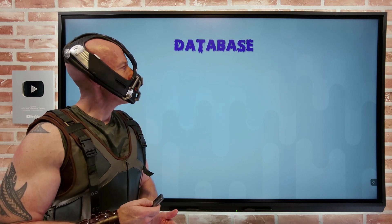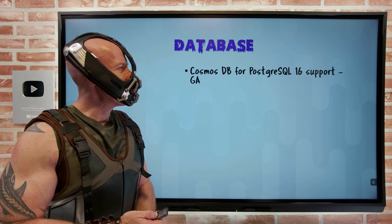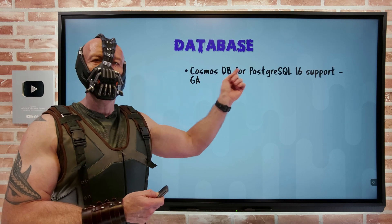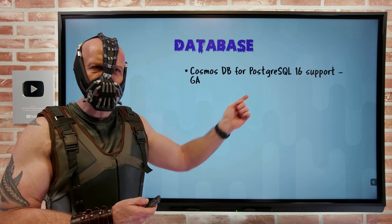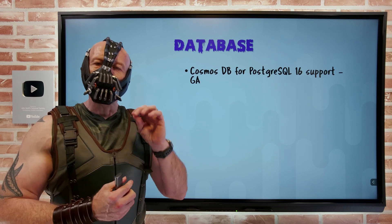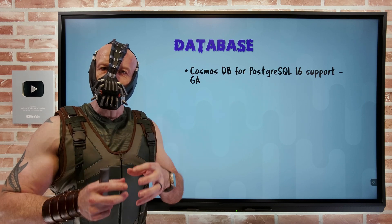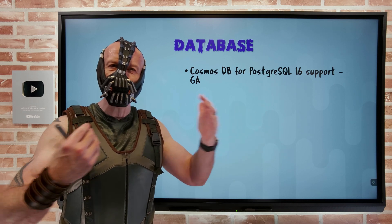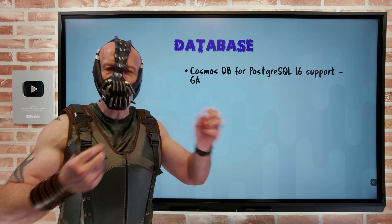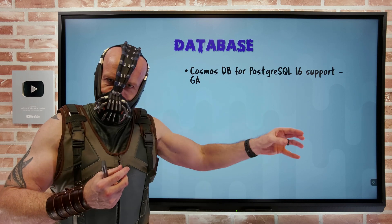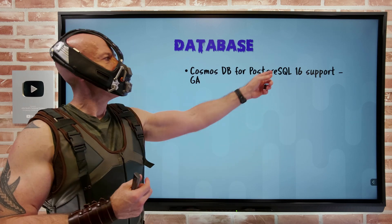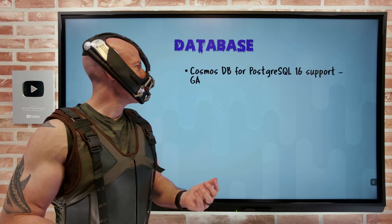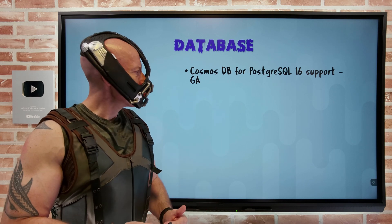On the database side, Cosmos DB for PostgreSQL — which uses the Citus extension to give us very large scalability and very high performance by sharding the data — now supports PostgreSQL in GA.